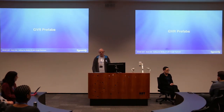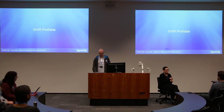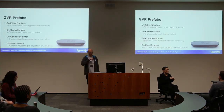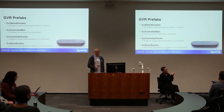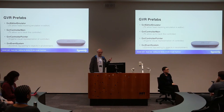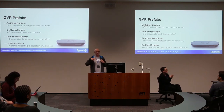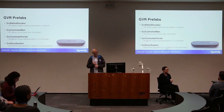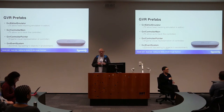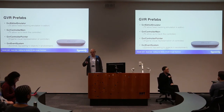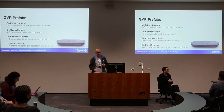Now we're going to throw a few prefabs into the scene so we can start simulating the environment and interacting with it. We're going to use: the GVR Headset Emulator, which allows tracking of your head in the editor so you can test before having a device; GVR Controller Main, which tracks what you're doing with your controller in 3D space; the GVR Controller Pointer, which puts a 3D representation of the controller in VR space so you can see what you're pointing at; and finally we'll add an Event System so we can track events from the controller.